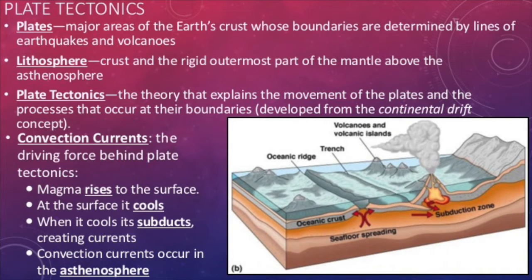The earth's crust is broken up into sections called plates. The theory of plate tectonics states that these plates move over the molten mantle and separate or collide at boundaries. Our evidence for this idea comes from seafloor spreading, experienced at divergent oceanic boundaries, and the theory of continental drift. The driving force comes from convection currents in the mantle.